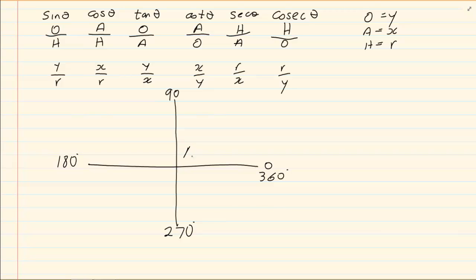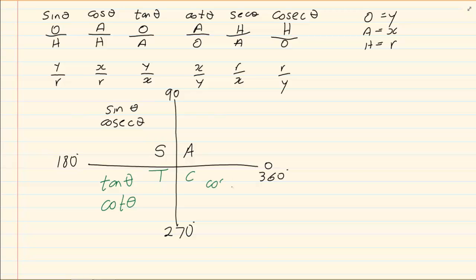In the first quadrant all ratios are positive. In the second quadrant only sin and cosec are positive. In the third quadrant tan and cot are positive. In the fourth quadrant cos and sec are positive. We usually say 'all students take coffee' to remember this information.